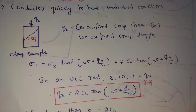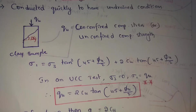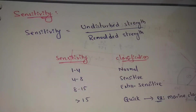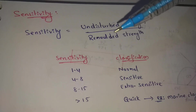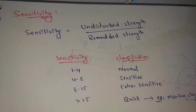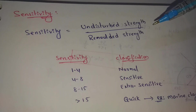Now let's look at different soils and sensitivities. Sensitivity can be easily determined using the Unconfined Compressive Stress test. Sensitivity is equal to undisturbed strength divided by remolded strength.